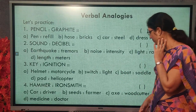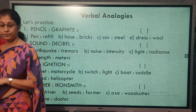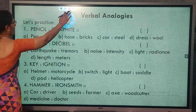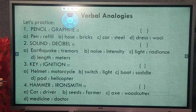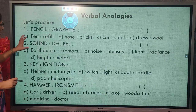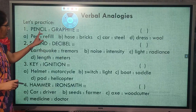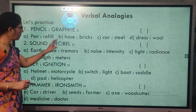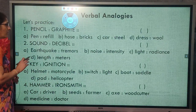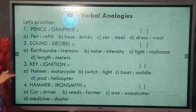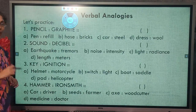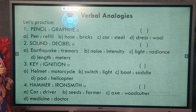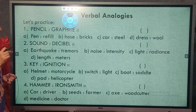Let us do some examples. Generally the question pattern will be like this: one pair is given, we have to find the relation between these two words, then find the same relation in the given choice. Let us take pencil and graphite. Let us make a sentence: graphite is in the pencil which helps to write.